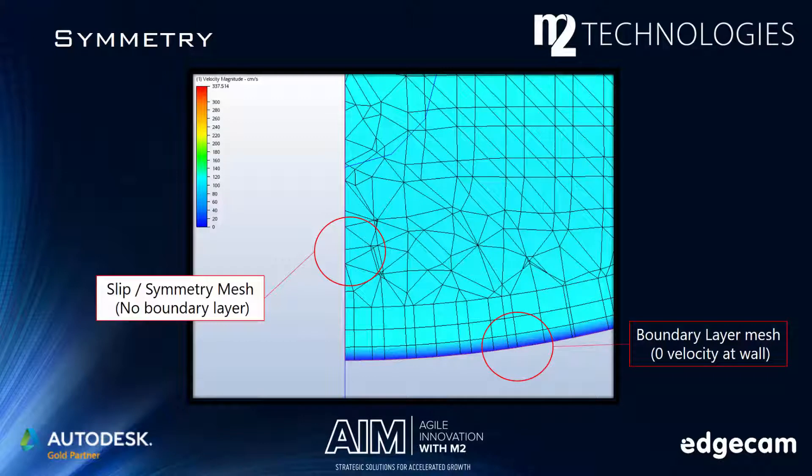In the full model, the fluid on that surface will be slipping against fluid, not shearing against a wall. The slip symmetry boundary condition is how we tell CFD that this isn't a wall, and that we don't want friction there.